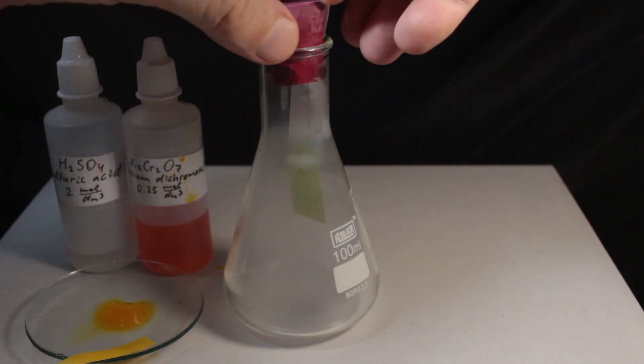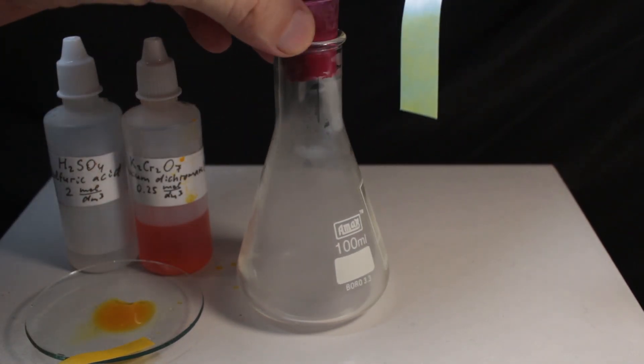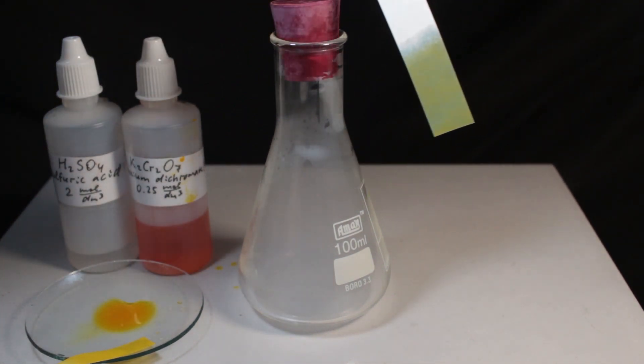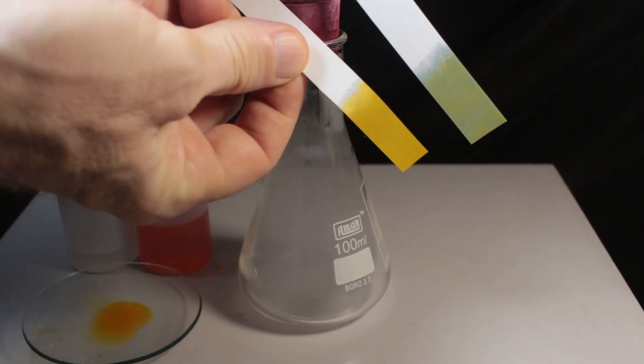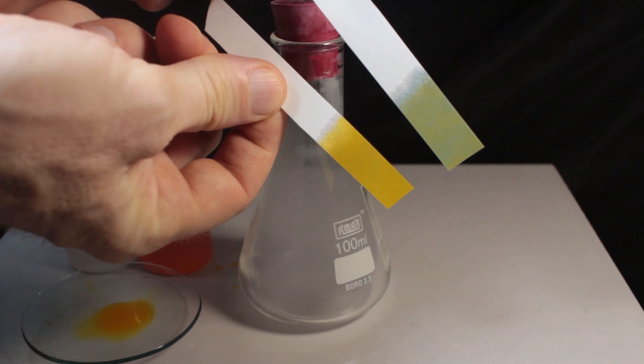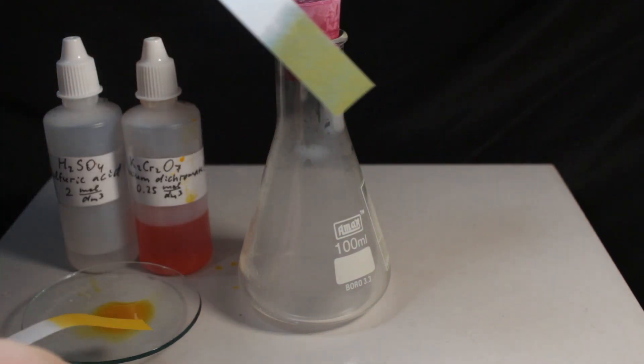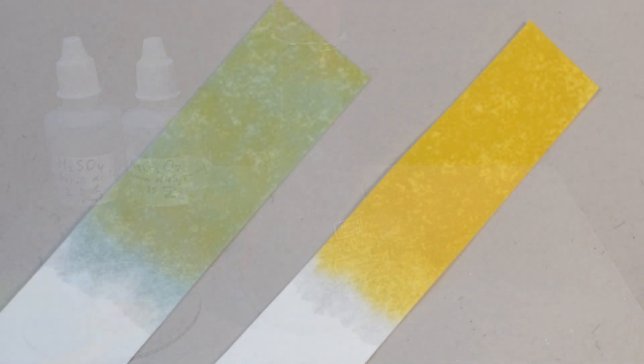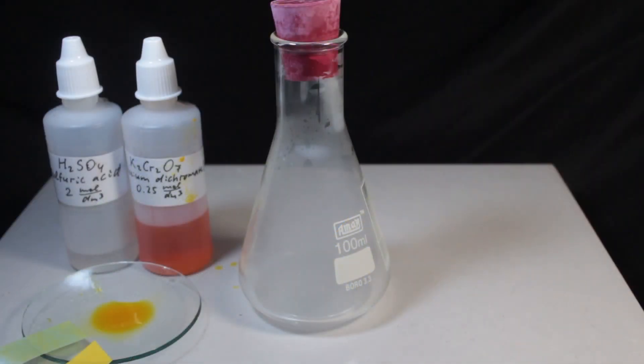Color changes virtually immediately from orange into green. That's the test for sulfur dioxide. Acidified potassium dichromate paper turning from orange to green.